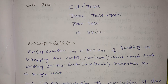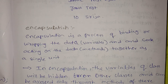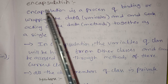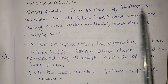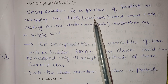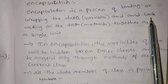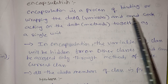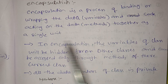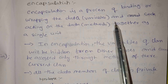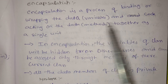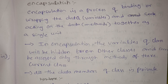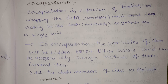Next we have encapsulation. Encapsulation is a process of binding or wrapping data — variables and code acting on the data — methods together as a single unit. Encapsulation is data variables and methods as one single unit.